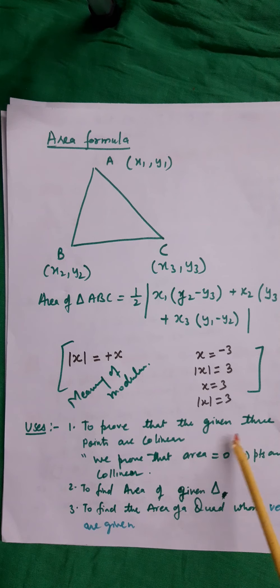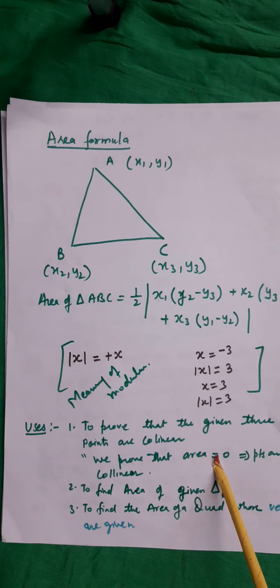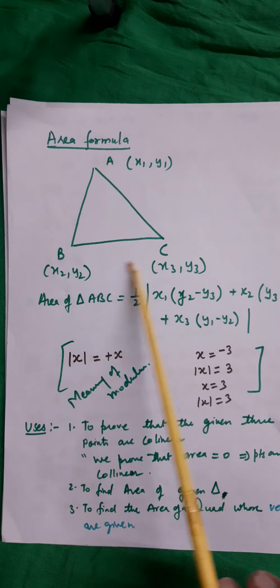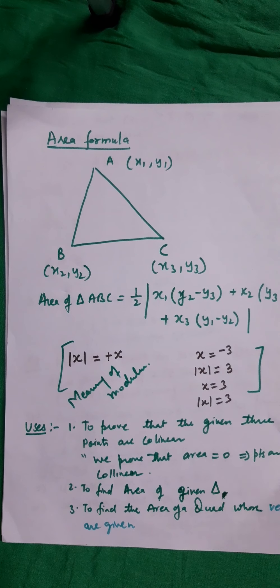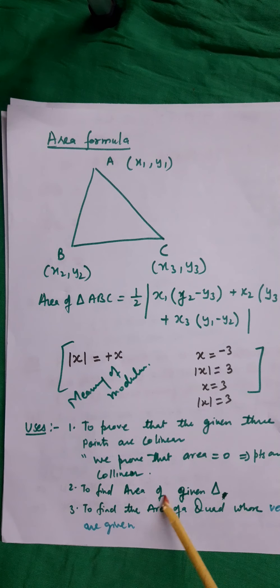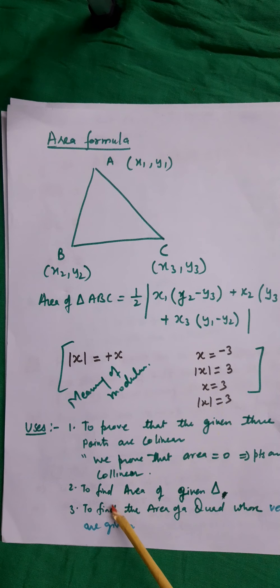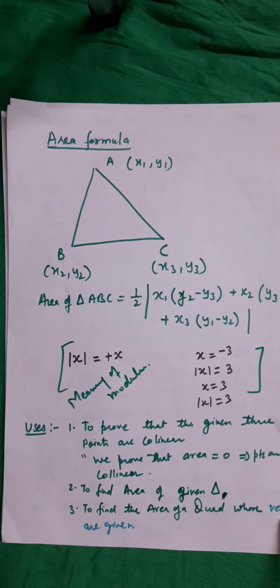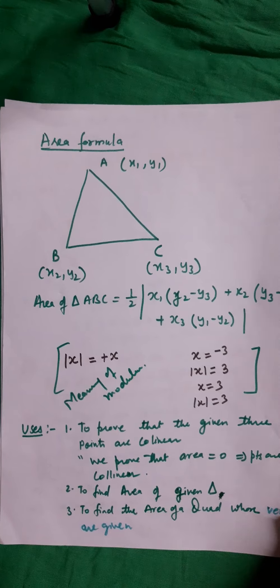This area formula is used to prove that given three points are collinear. For that we will have to prove the area of the triangle formed by the three points is zero, which implies the points are collinear — meaning they lie in a straight line. It is also used for finding the area of a given triangle, and we can use this area formula to find the area of a quadrilateral whose vertices are given.